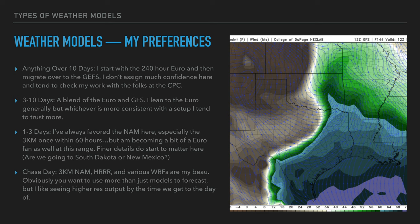In the three-to-ten day range, setups become more real to me. I use the Euro and GFS, tending to lean on the Euro a bit more — but I look at whichever has had the better recent track record. Sometimes the GFS goes on a hot streak and I lean on it more. This is also the range where setups tend to go from looking really good to just average by the day of, especially at seven to ten days out. Models tend to overestimate at this range.